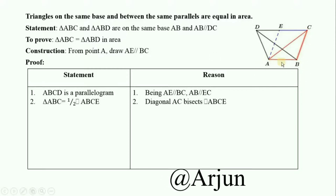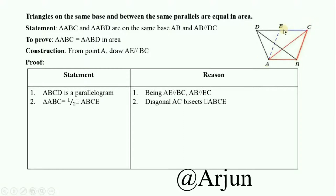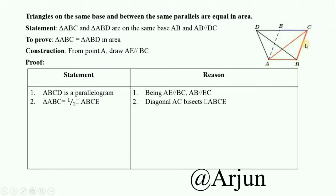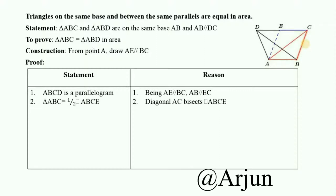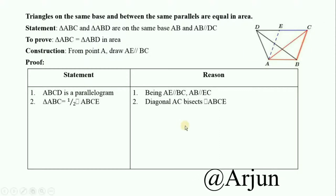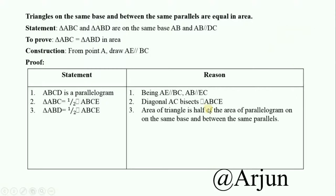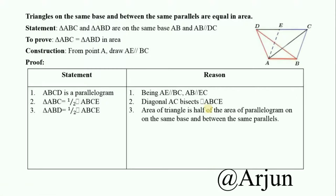ABCE is a parallelogram, and the diagonal of a parallelogram bisects it. So triangle ABC is half of parallelogram ABCE. The reason is that diagonal AC bisects the parallelogram ABCE.